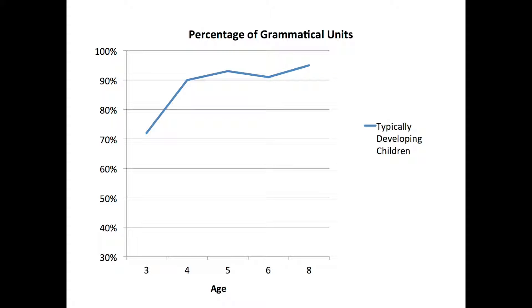At the end we'll show you some tables that will summarize all this information. What is important is that between age four and eight, we know that typically developing children have most of their utterances — above ninety percent — grammatical. Now, how can we take this information and apply it to children with language impairments?